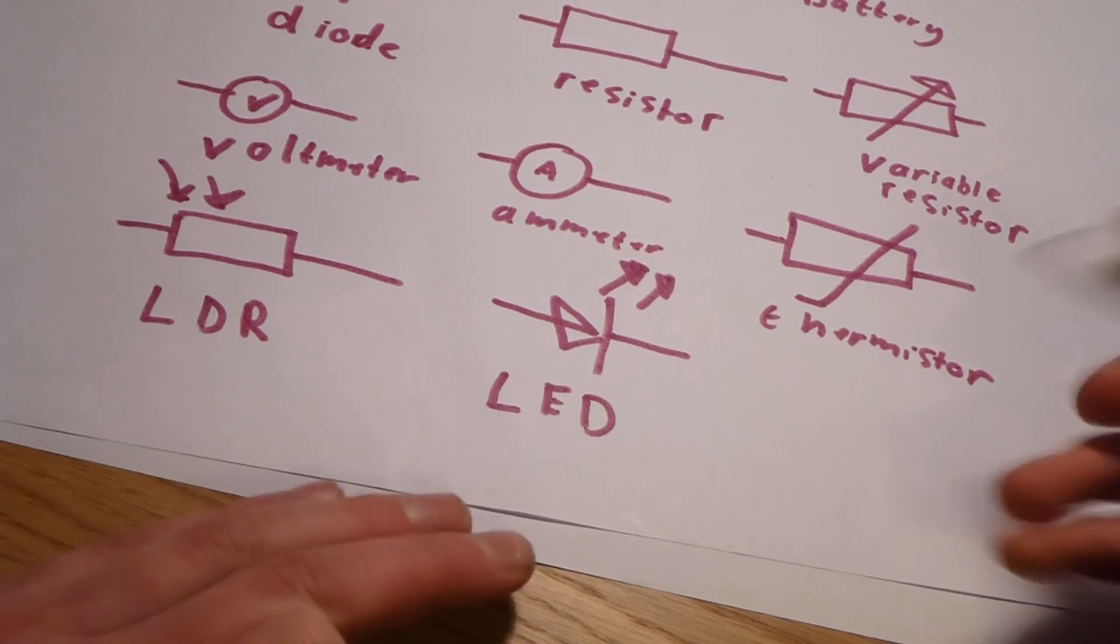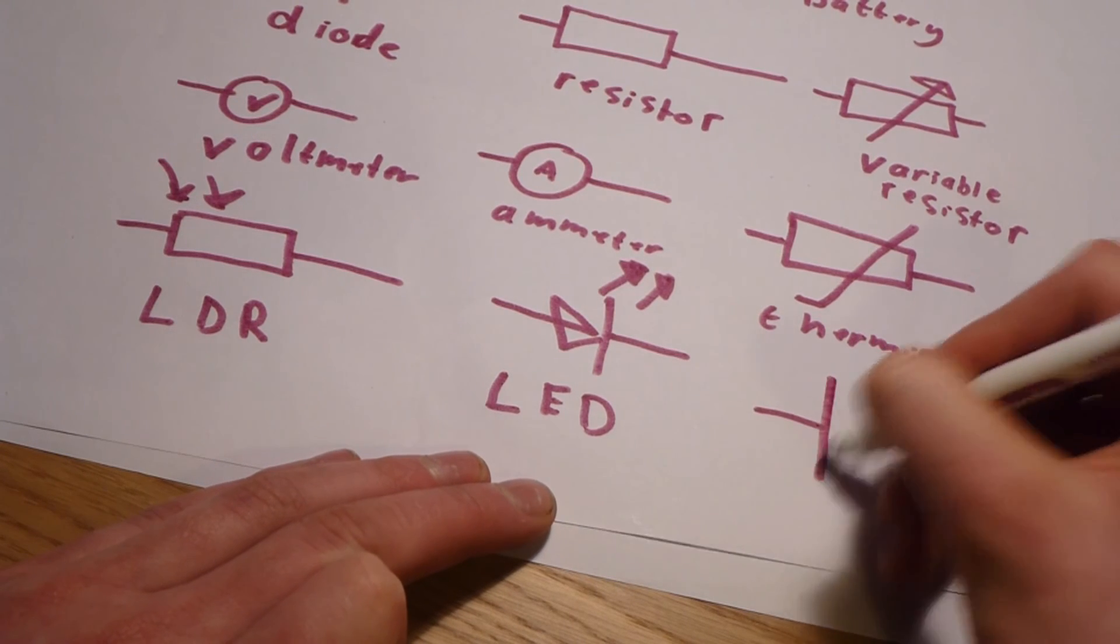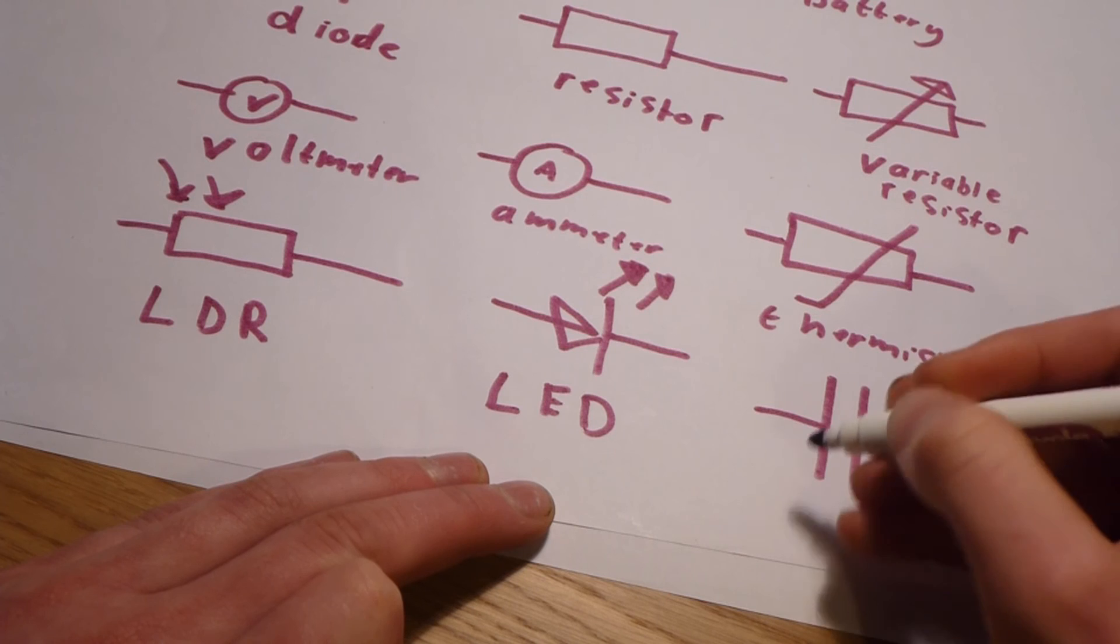Finally, we have a capacitor, which is drawn very similar to a cell, but both of these are the same length.